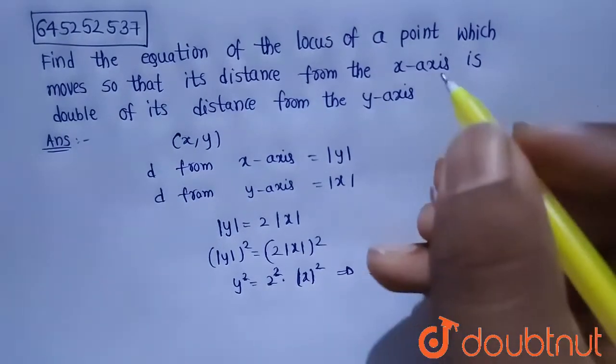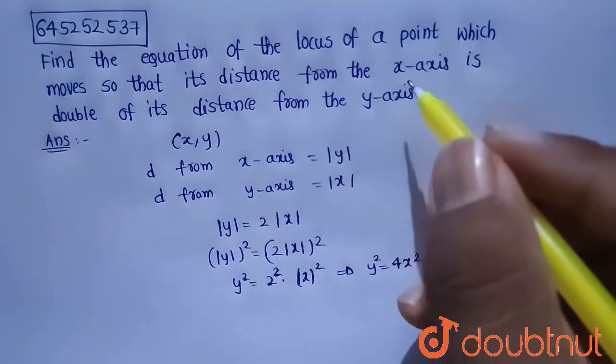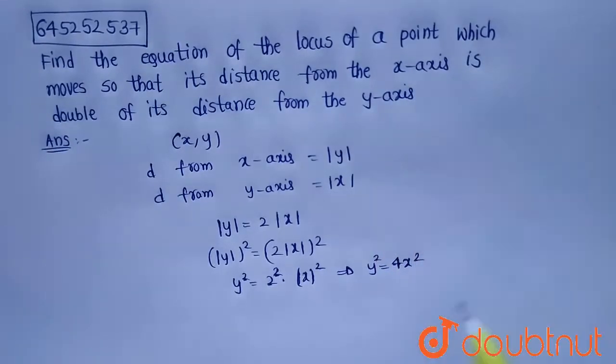So the locus of the point which moves so that the distance from x-axis is double of its distance from y-axis is y² equals 4x².